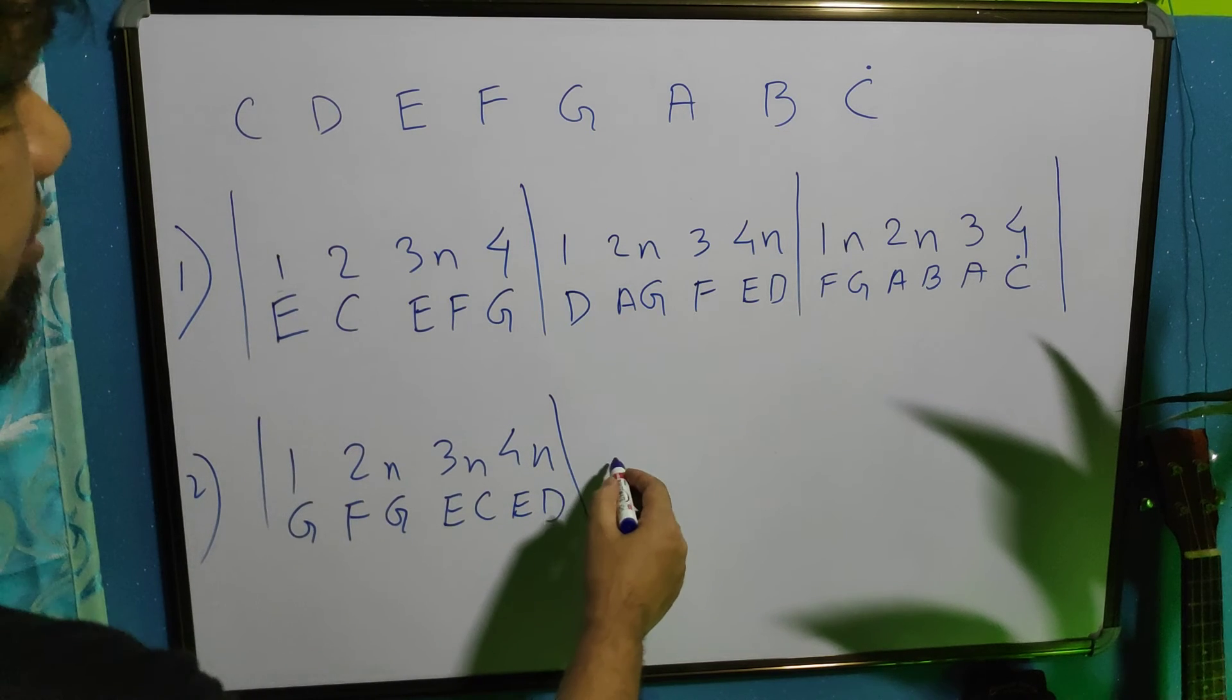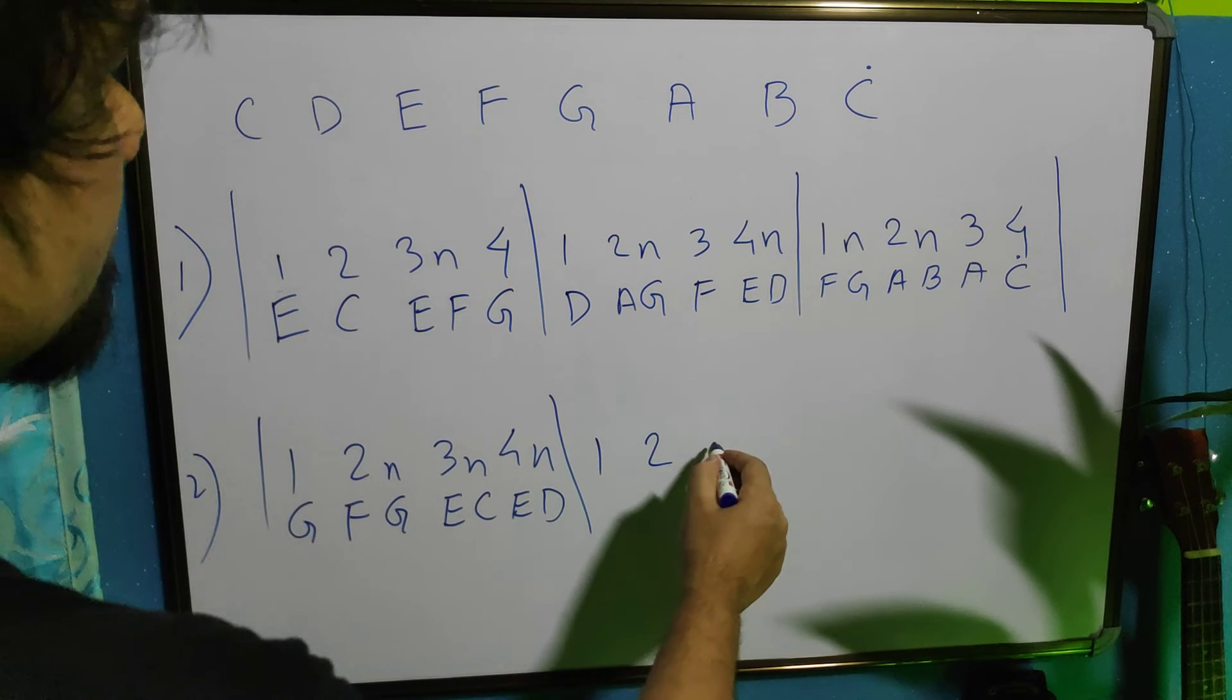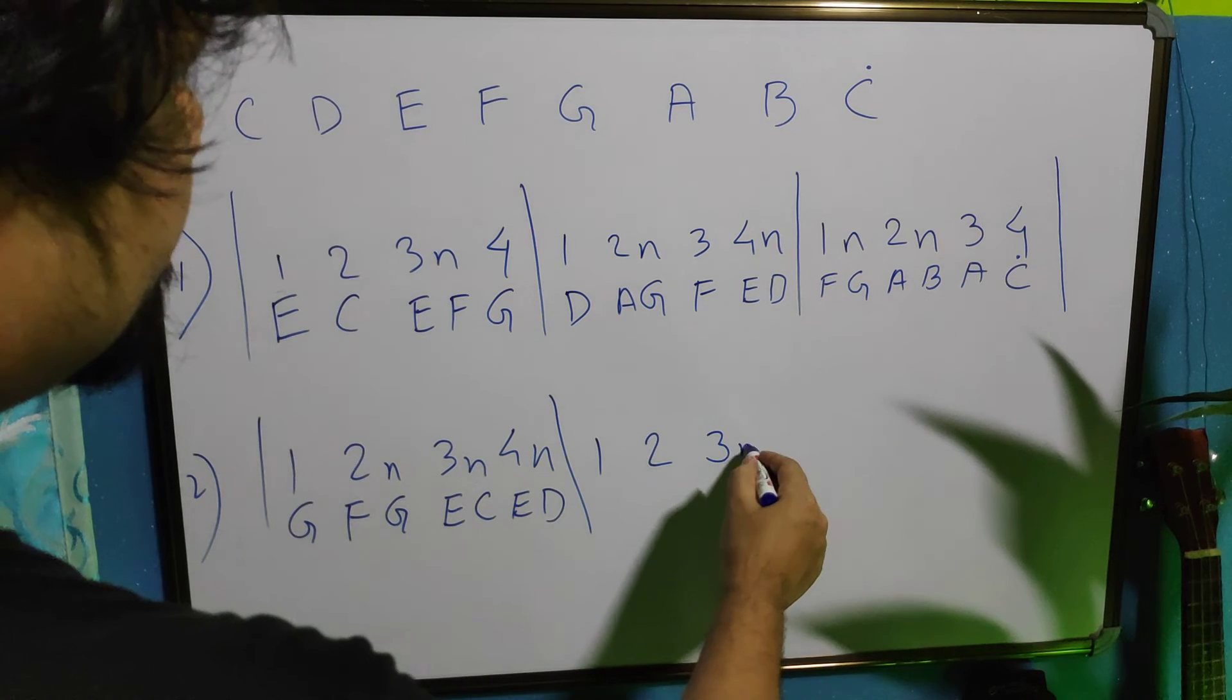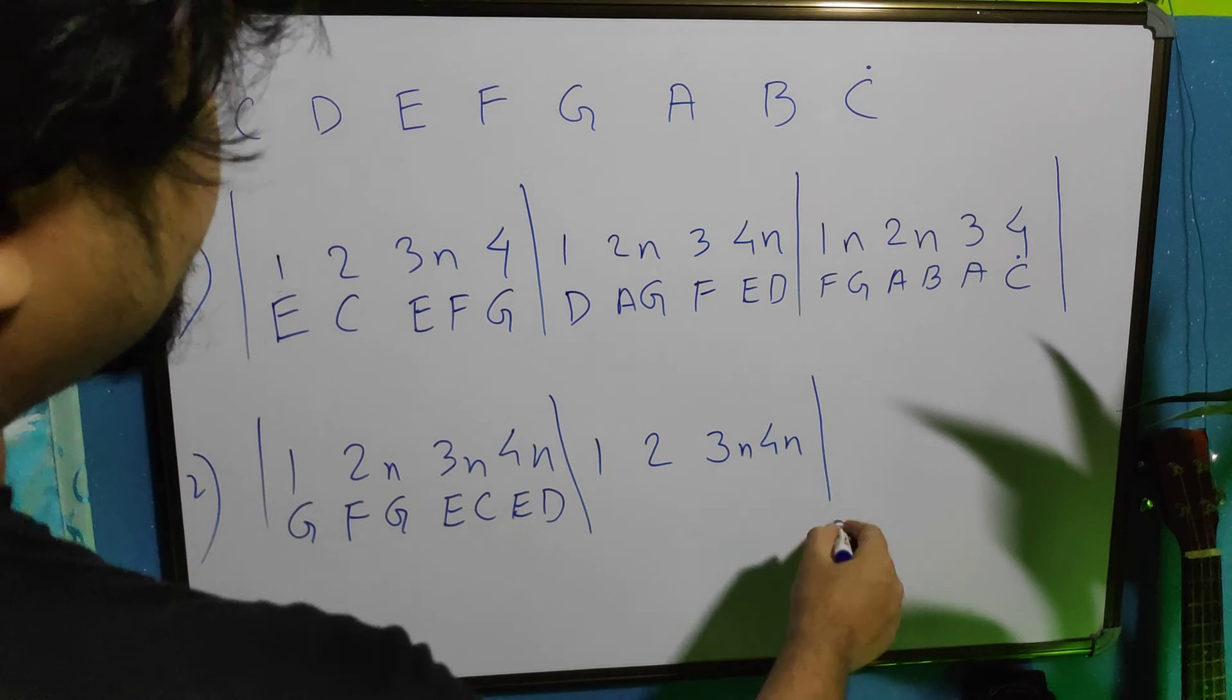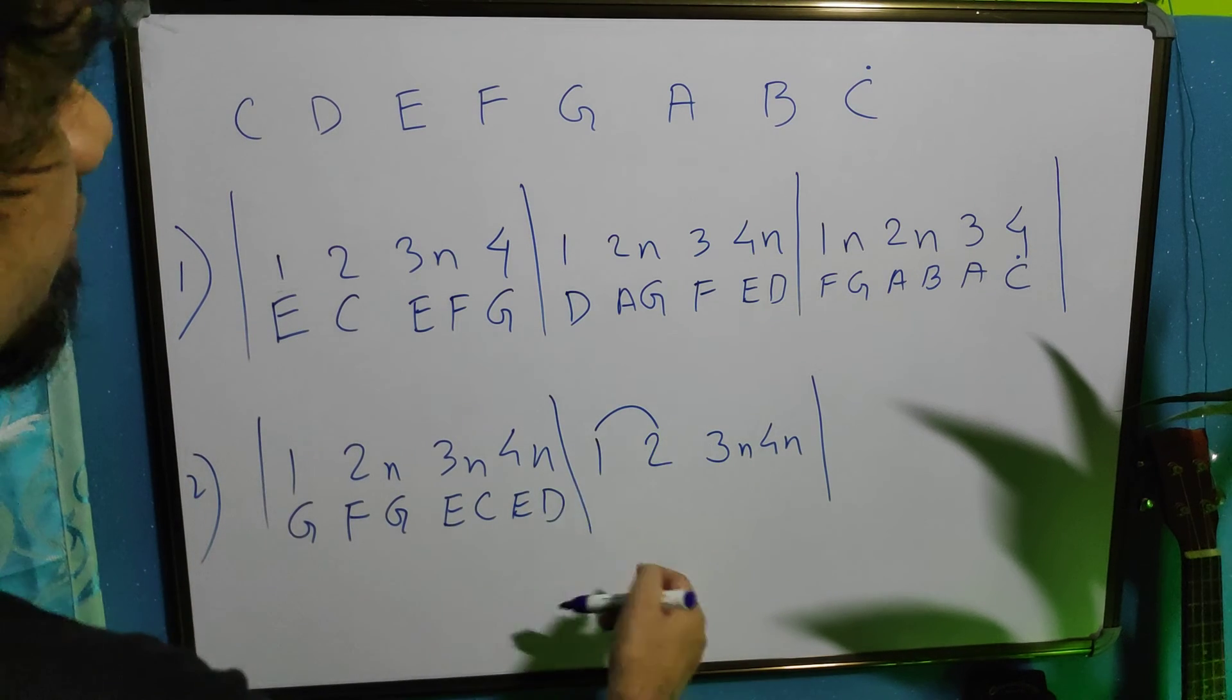Now, here we will do something different like 1, 2, 3, N, 4, N. We tie up 1 and 1. 1 and 2. Tie means this one we will not play.